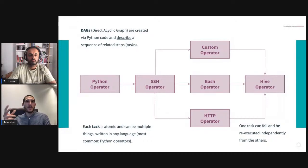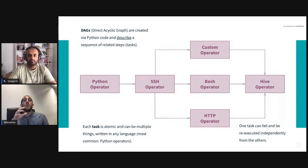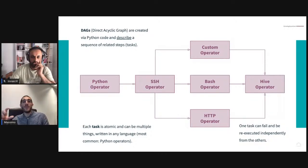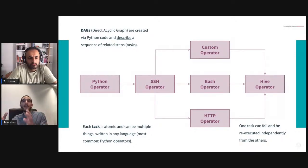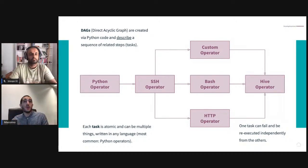Airflow is just cron jobs on steroids. This is a DAG — a Directed Acyclic Graph — which is the representation of a job executed in Airflow. A DAG is composed by operators; an operator is how you define the task to be executed. For example, the machine learning pipeline I described would use Python operators, because the code is written in Python, with each task dependent on the previous. It's a DAG because every operator can depend on a previous one and be a successor of another.